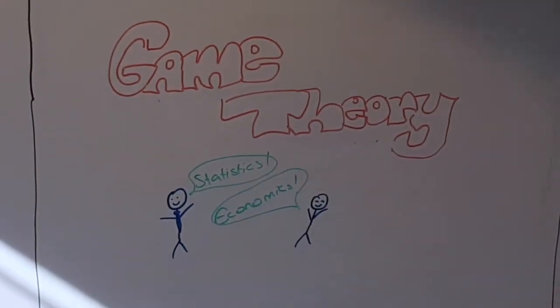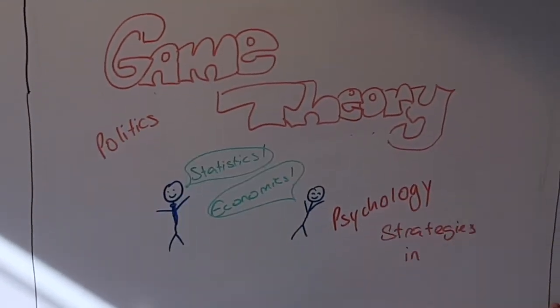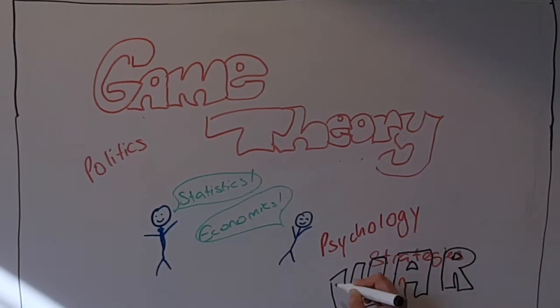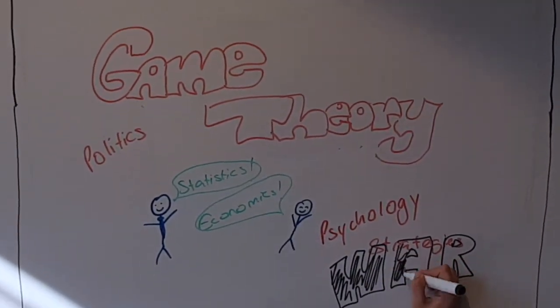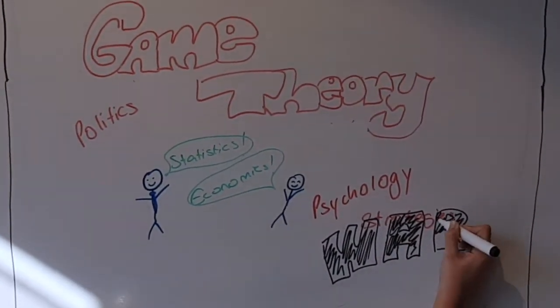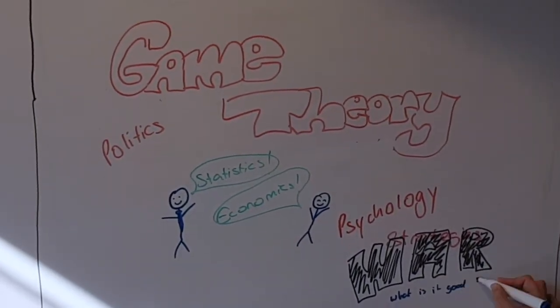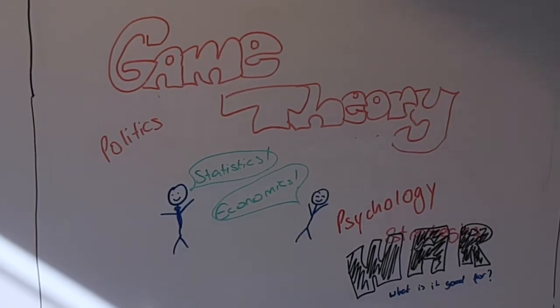Game theory is an area of mathematics which focuses on analyzing strategies for competitive situations, in which the outcome of a player's actions depends majorly on the actions performed by other competitors. This theory can be applied in many ways, with the term 'game' being potentially misleading, as it has been used within economic contexts and psychology.